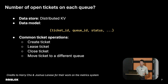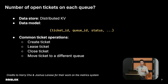The status can be created, leased, closed, or similar. Common operations also include moving a ticket to a different queue if it's not assigned to the right one — say, it's a different locale or whatever.